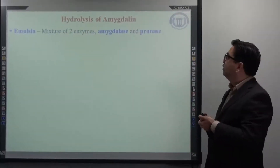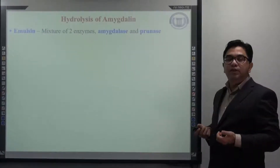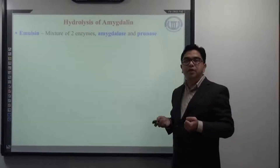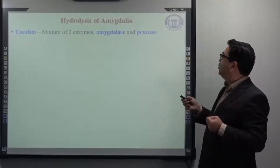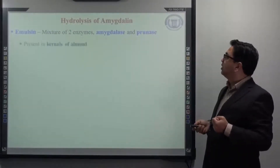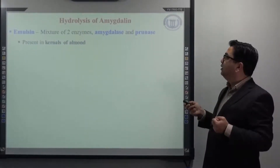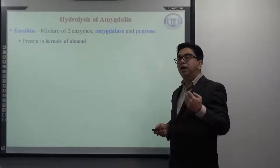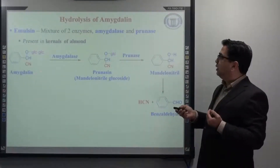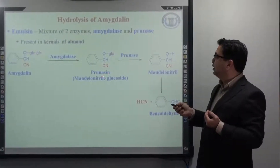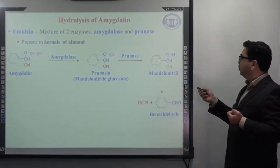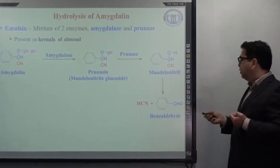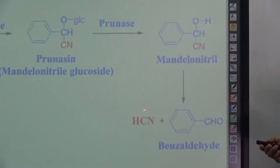The hydrolysis of amygdalin takes place with the help of an enzyme known as emulsin. Emulsin is actually a term used for a mixture of 2 enzymes. The first enzyme, amygdalase, is responsible for the hydrolysis of amygdalin and is present in the kernels of almond. Amygdalase causes the hydrolysis of one sugar, resulting in the formation of prunasin. Prunasin is further hydrolyzed by the enzyme prunase, resulting in the formation of mandelonitrile. Mandelonitrile then undergoes degradation to release HCN and benzaldehyde.